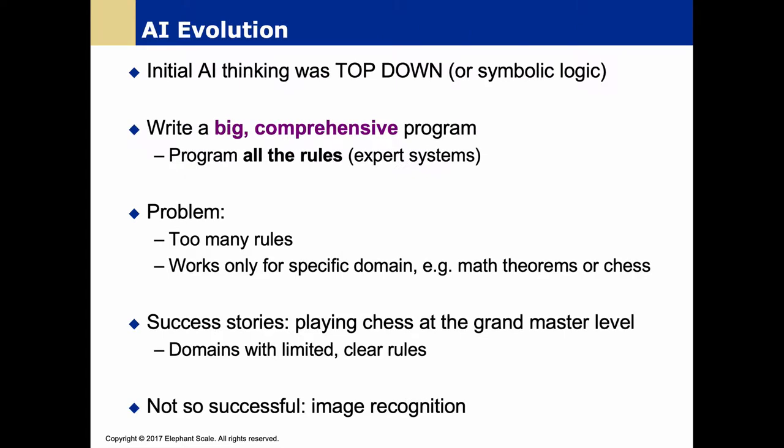Earlier days of artificial intelligence were based on top-down logic, or symbolic logic — very similar to how we prove mathematical theorems. We'd take some basic rules, program those into a system, and see if we could derive other inferences. That works well in domains with very specific rules, like chess-playing programs where the rules are well known. But for other approaches, like recognizing what's in an image, it doesn't work so well because there are just too many rules.